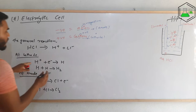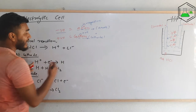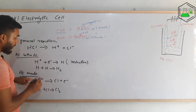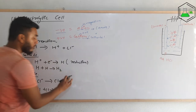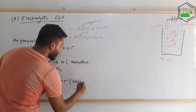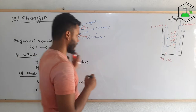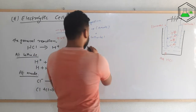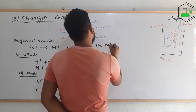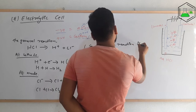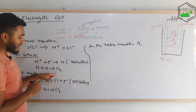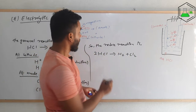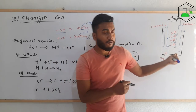One more thing to understand: at the cathode, H+ is gaining one electron — gain of electron is called reduction. At the anode, Cl− is losing one electron — loss of electron is called oxidation. Since both oxidation and reduction are happening in the same reaction, the overall process is called a redox reaction. The overall redox reaction is: 2HCl → H2 + Cl2.